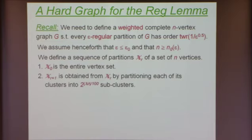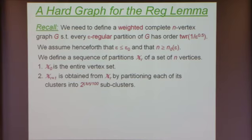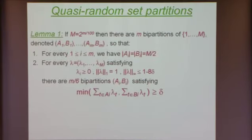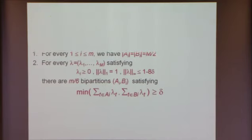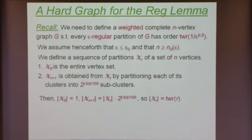This is exactly the same function as in the quasi-random partitions lemma, where capital M is 2 to the small m over 100. The number of clusters in the first partition is 1, and each partition has exponentially many more clusters than the previous one. So the number of clusters in partition X_r is a tower function of r.